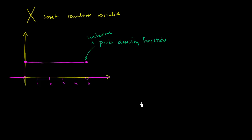The first question is: what is the height, or what is this level? We see it's uniform, but uniform at what level? What value does this horizontal line intersect the vertical axis for our probability density function? To think about it, we have to realize that whether we're talking about a continuous or a discrete random variable, the probability of getting any one of the possible outcomes — the sum of all of those — has to equal 1.